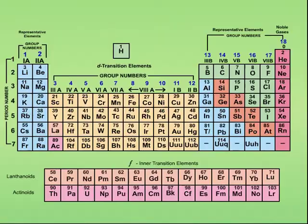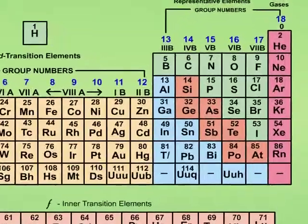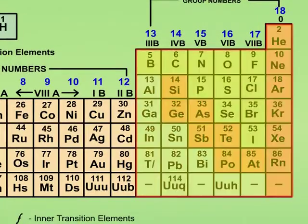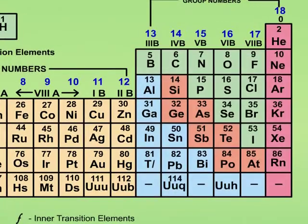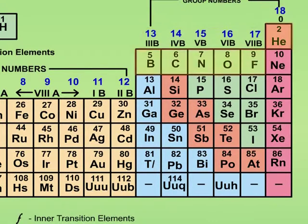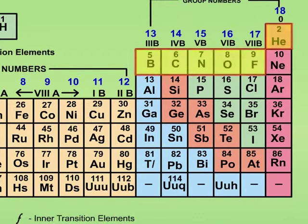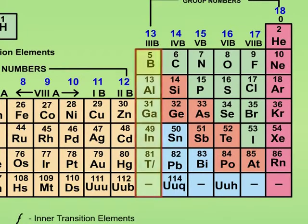Students, there are six groups of P-block elements in the periodic table, numbering from 13 to 18. Boron, carbon, nitrogen, oxygen, fluorine and helium are present at the head of the group. Today, we will discuss about group 13 elements.